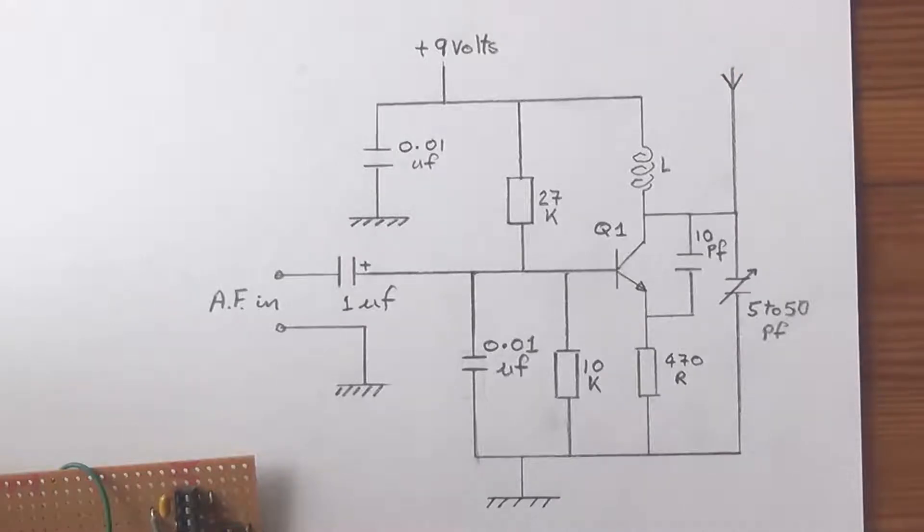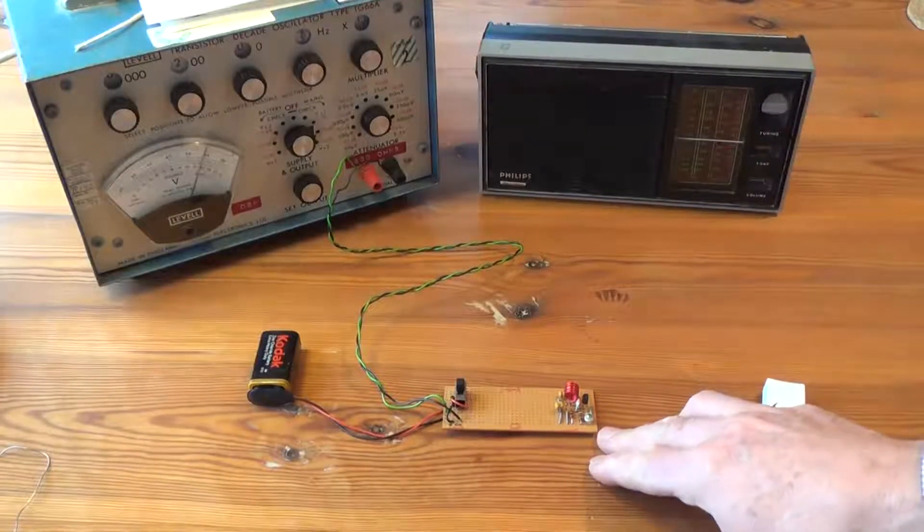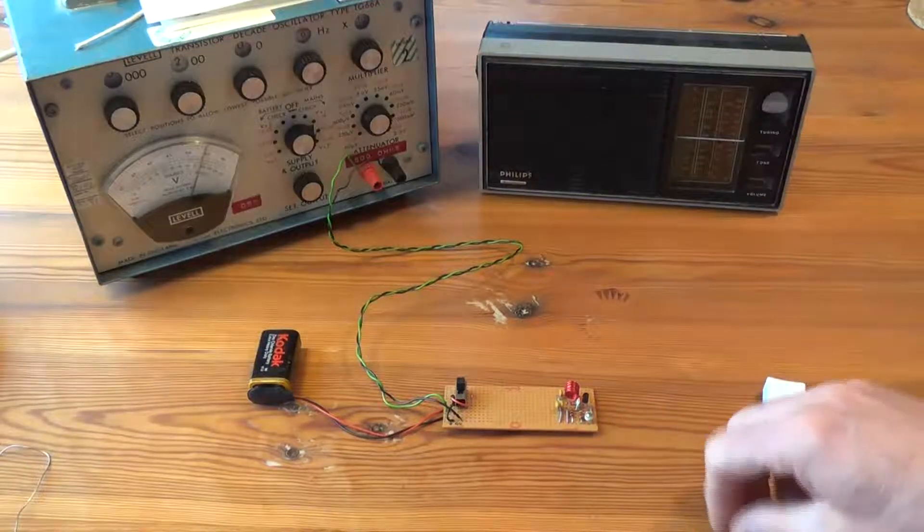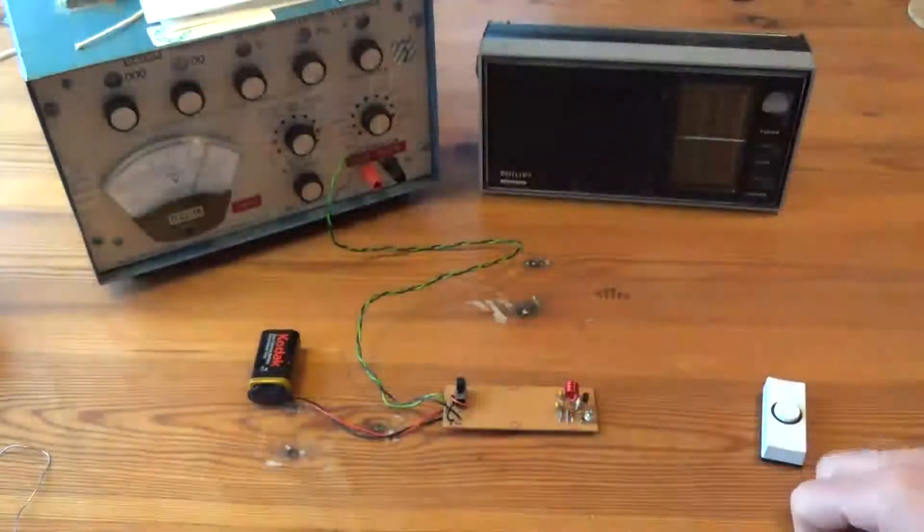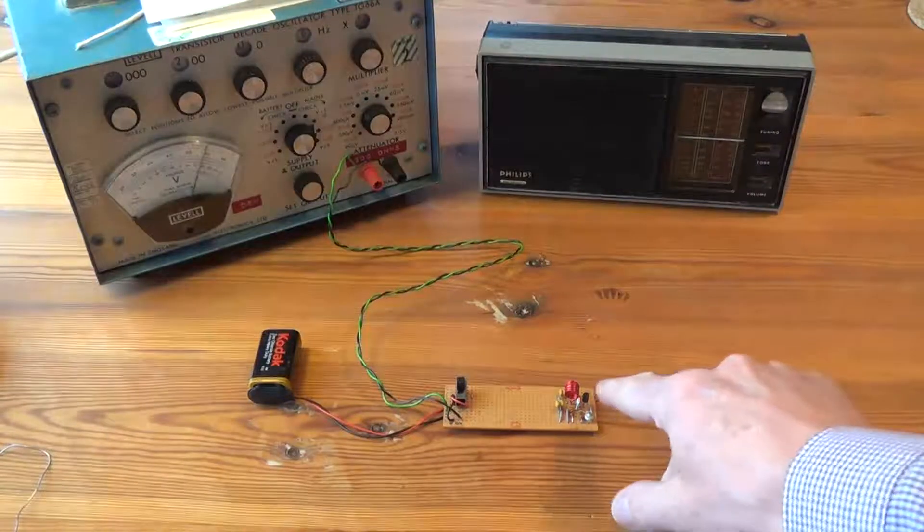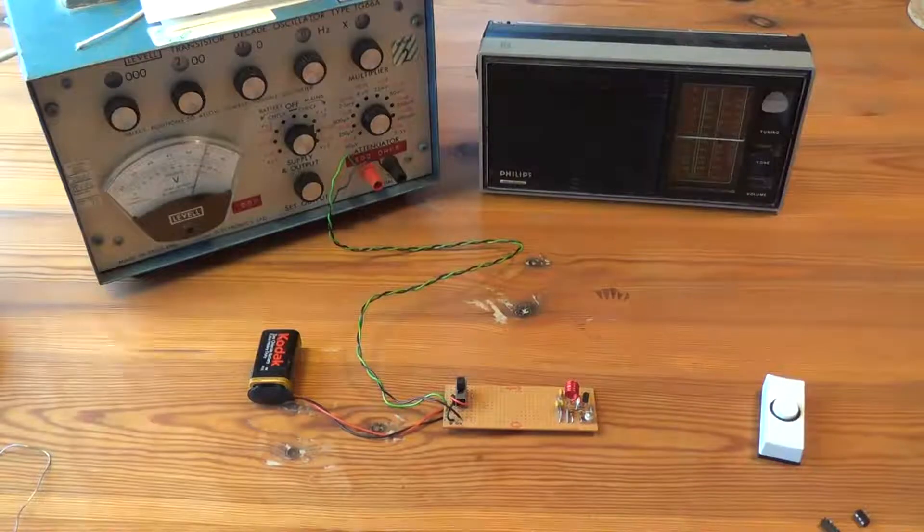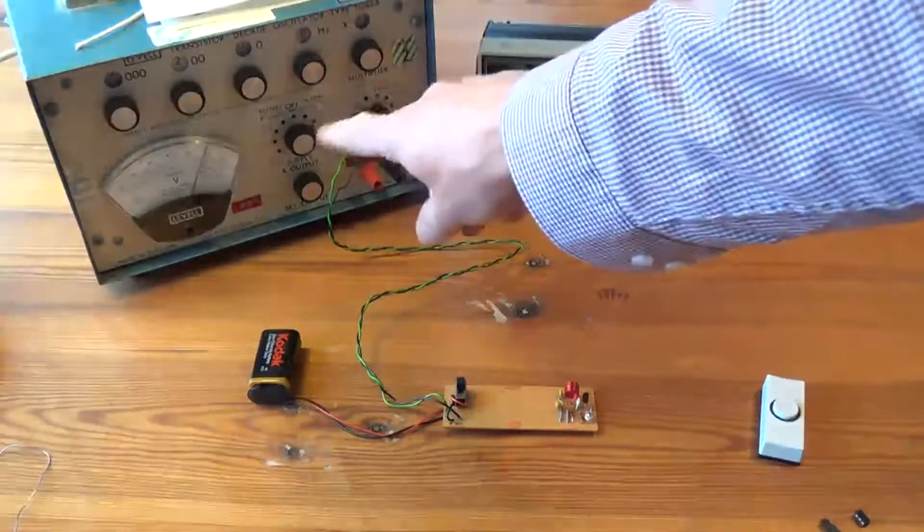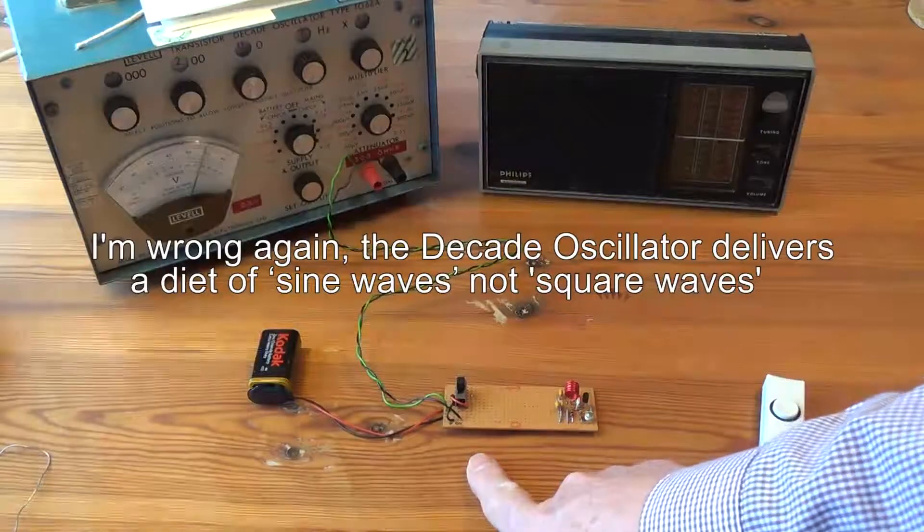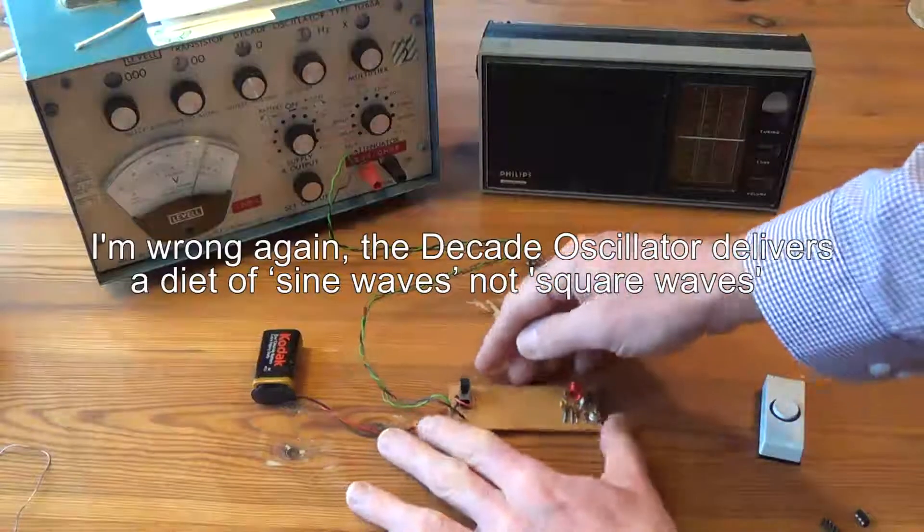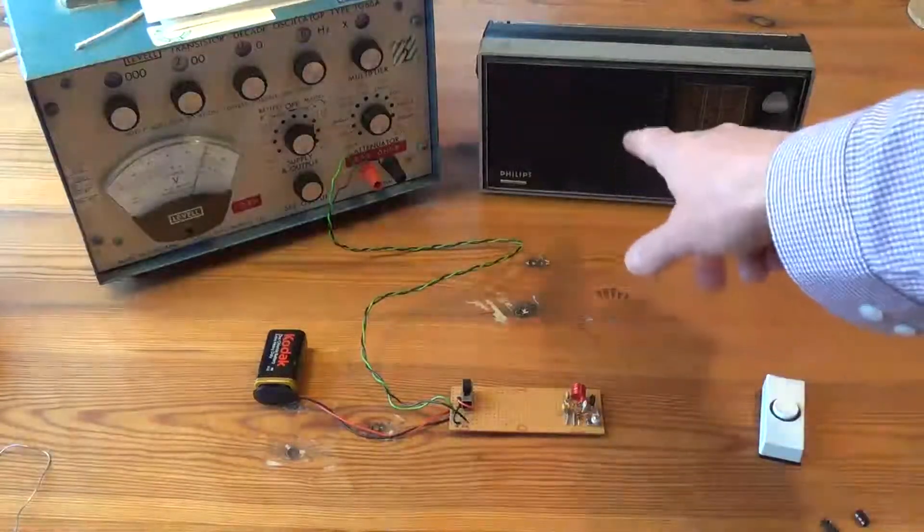I've got the little transmitter here now and I've taken out the little sockets that I had for the transistor and the coil and fitted the transistor directly to the board. I've made a six turn coil and you can hear the radio is tuned to a vacant station. I've got a signal generator set at 200 Hertz feeding a square wave into the transmitter and when I switch the transmitter on you're hearing that 200 Hertz through the radio.